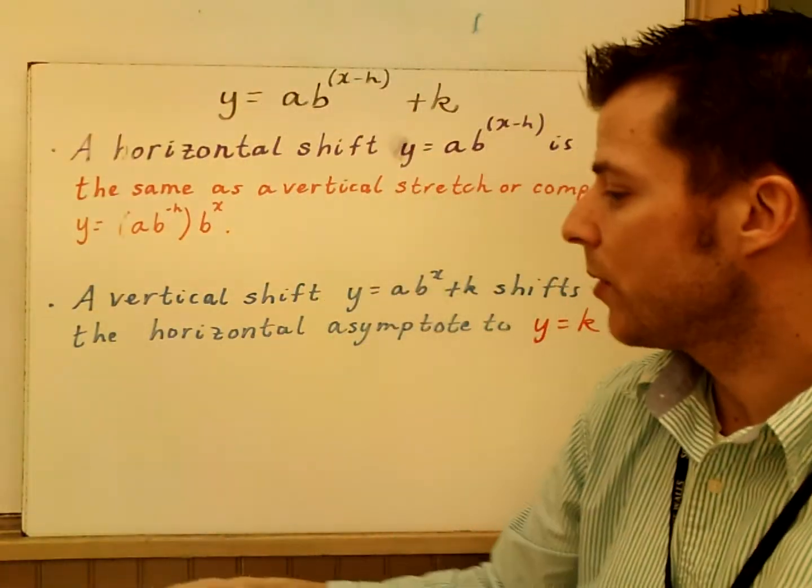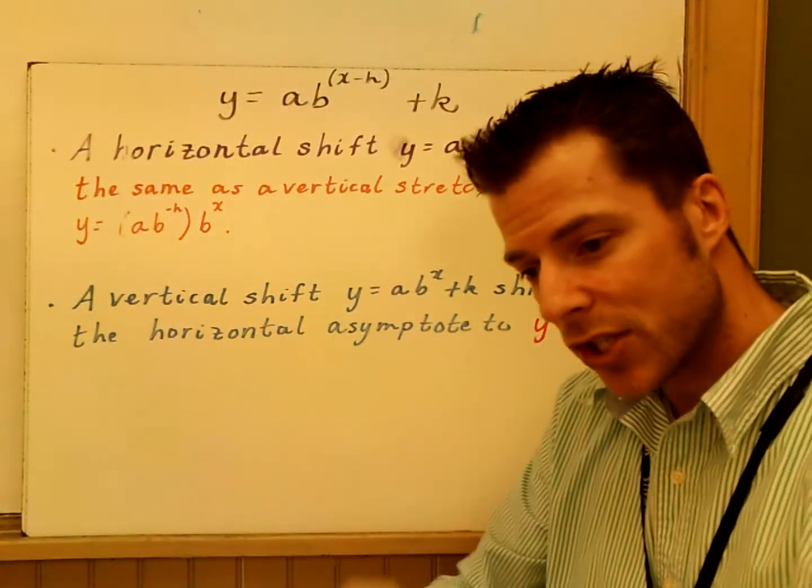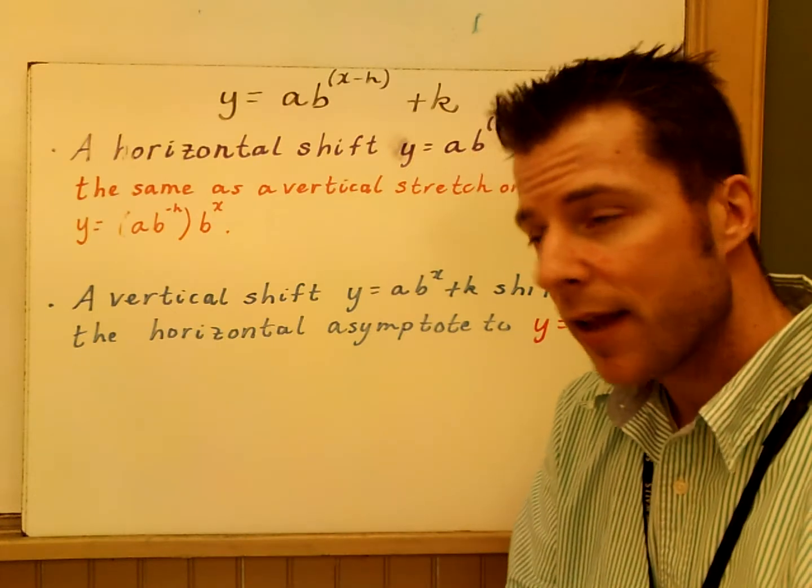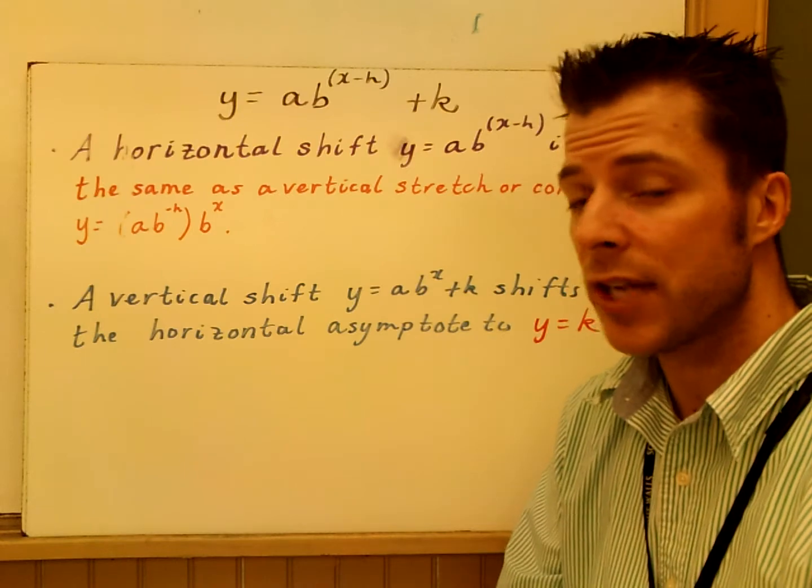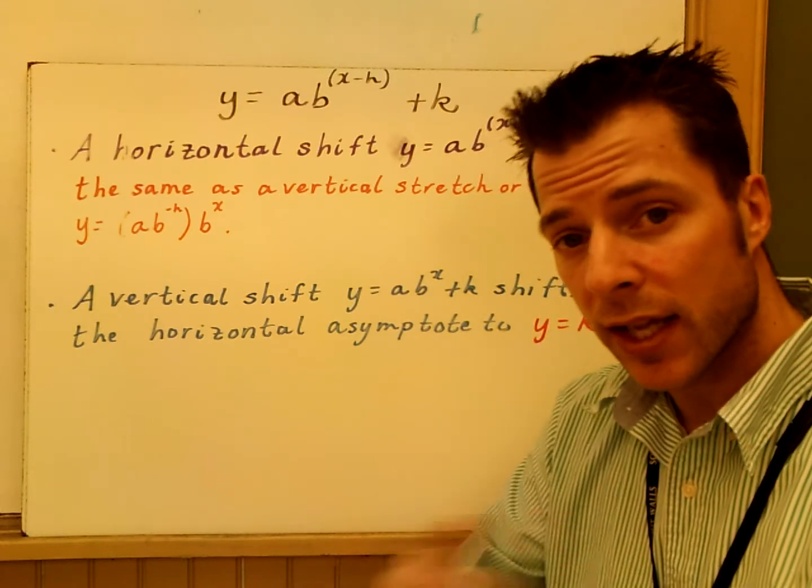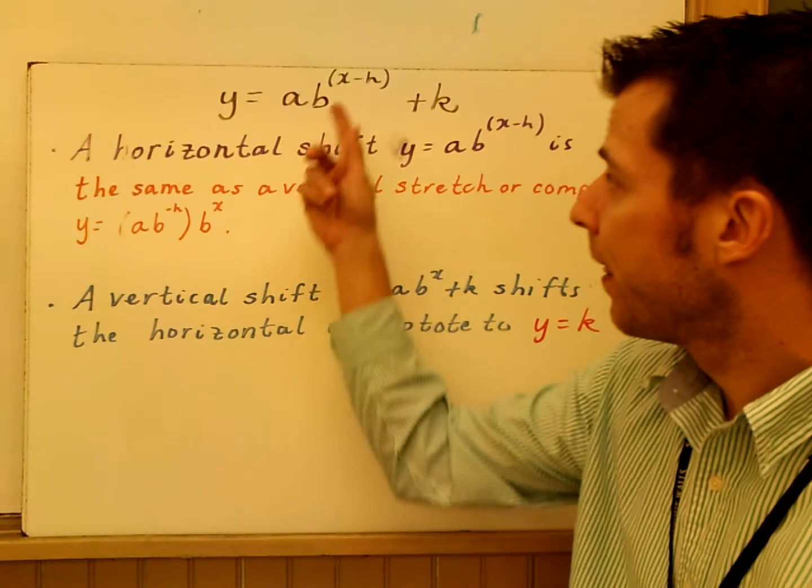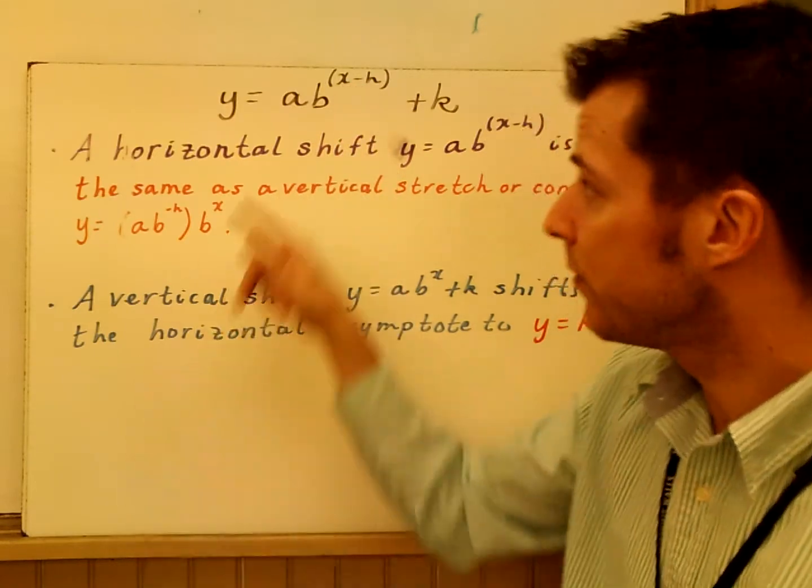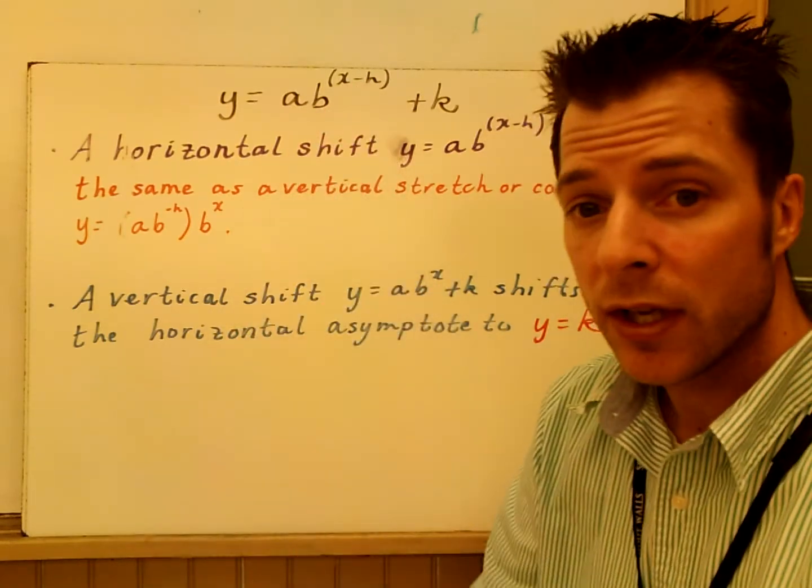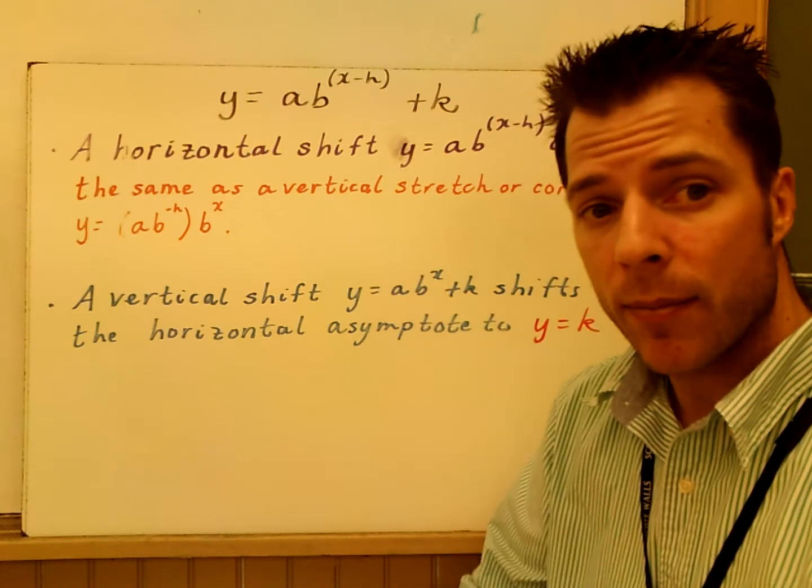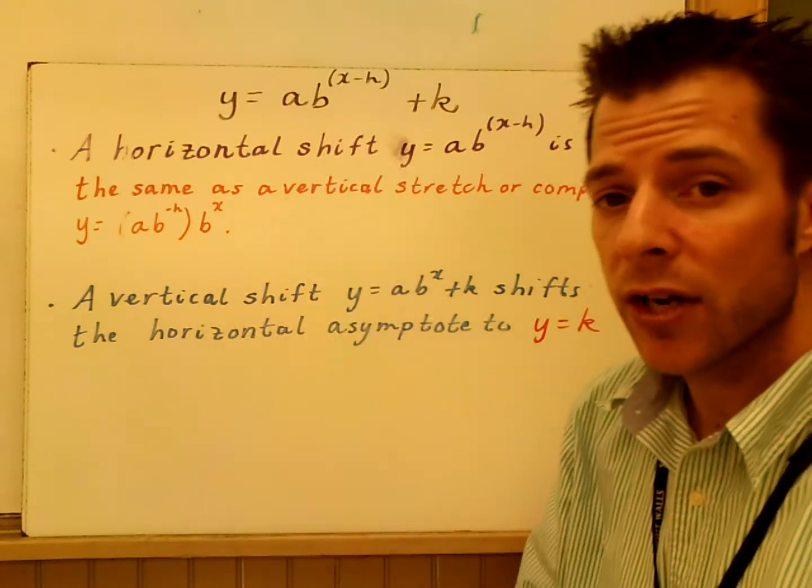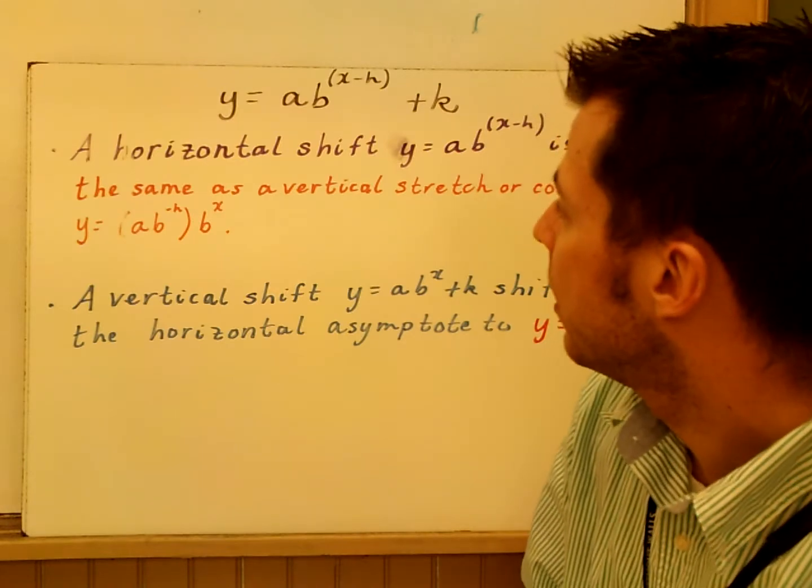We want to talk about, you have stretching and shrinking and reflections with A, but then you have H and K. H and K always play a role and they're the same role. H moves horizontally, left and right, and K moves up and down. Subtraction sign, you move right. If you see an addition sign there, you move left. It's the same that we did with quadratics, polynomials, all those. H and K are going to behave the same way.